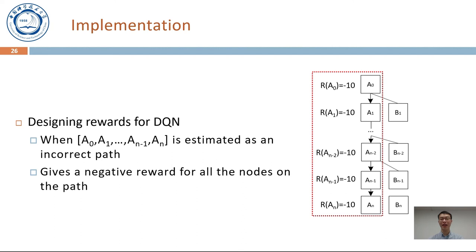In our DQN, when we estimate an incorrect path, we give a negative reward for all the nodes on the path to adjust their Q-values. As a result, it can increase the probability of selecting nodes with supporting lemma in future rounds, which leads to higher probability of successful verification.